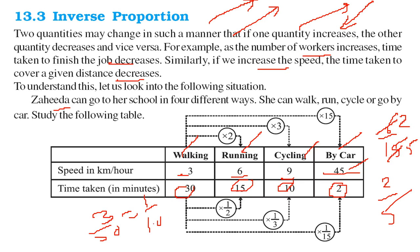So 1 by 10, if I multiply this by what number? So that I get this number. 3 by 30 is 1 by 10. 6 by 15 is 2 by 5. So if you multiply 3 by 30 with half, what do you get? Multiply half. You can also do one thing. You can see it in another way. Walking, if you multiply this 3 by 2, you get 6. If you multiply 30 by half, you get 15.